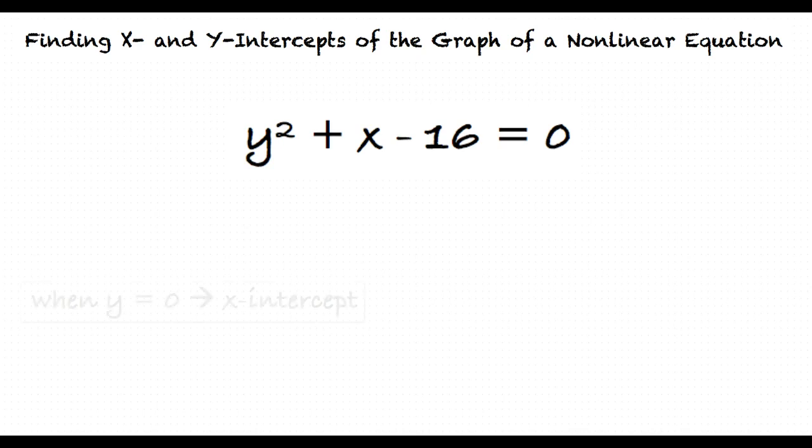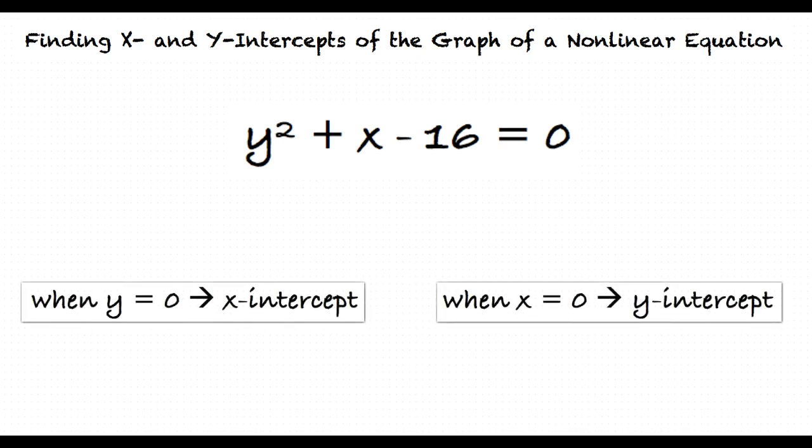The x-intercept is where y = 0, and the y-intercept is where x = 0, right? Exactly. This means that we substitute 0 for y to find the x-intercept, and substitute 0 for x to find the y-intercept.